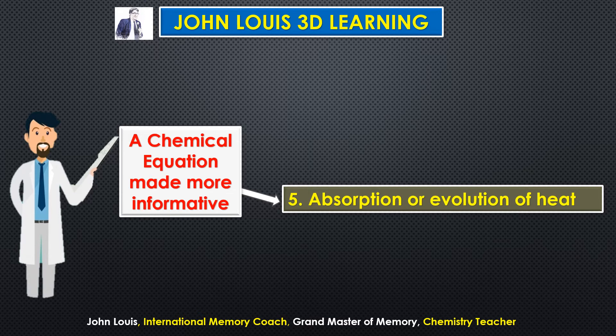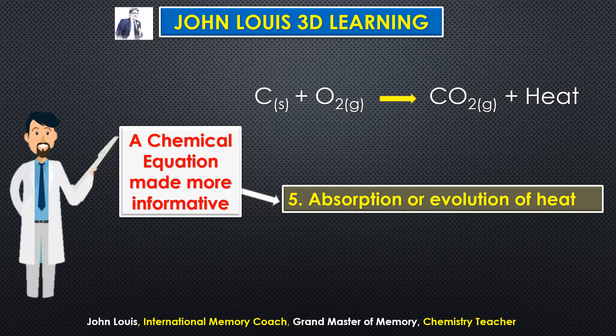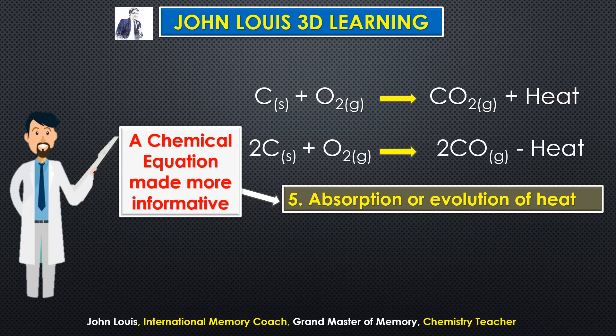The fifth additional information is absorption or evolution of heat. This can also be mentioned along with the equation. For example: carbon plus oxygen gives carbon dioxide plus heat. That means heat is given out. When carbon burns in oxygen to produce carbon dioxide, heat is evolved — that is why it is written as plus heat.